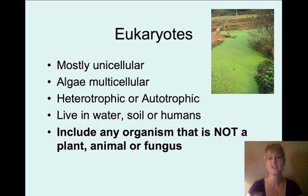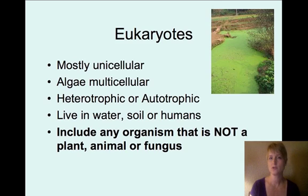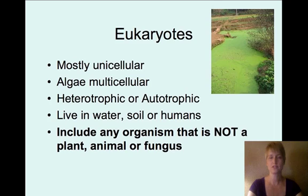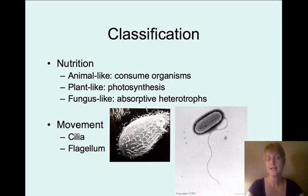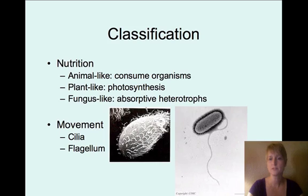They live in water, moist soil, and can also live in humans. Protists is an overall category for organisms that are not a plant, not an animal, and not a fungus. It's kind of a catch-all category — something might be a little plant-like but not exactly a plant, or a little animal-like but not exactly an animal. We classify protists by nutrition: animal-like protists are heterotrophs that consume organisms, plant-like protists are autotrophs that use photosynthesis, and fungus-like protists are absorptive heterotrophs.